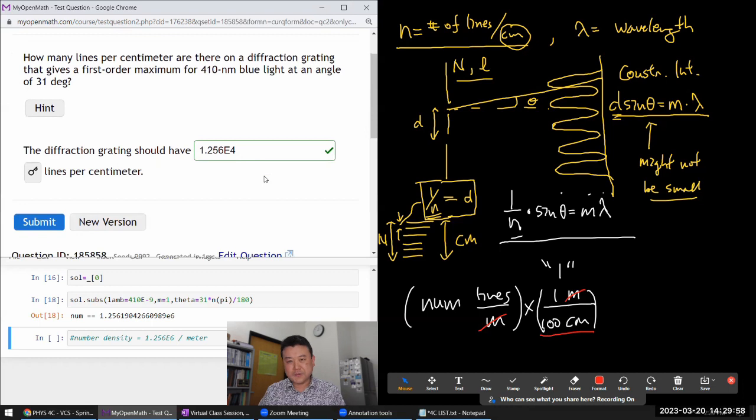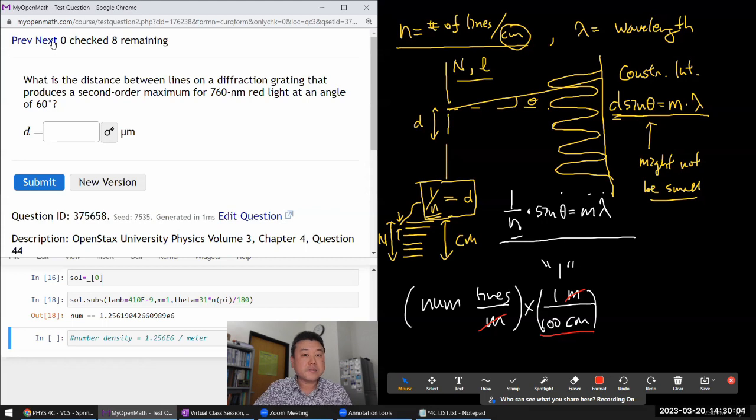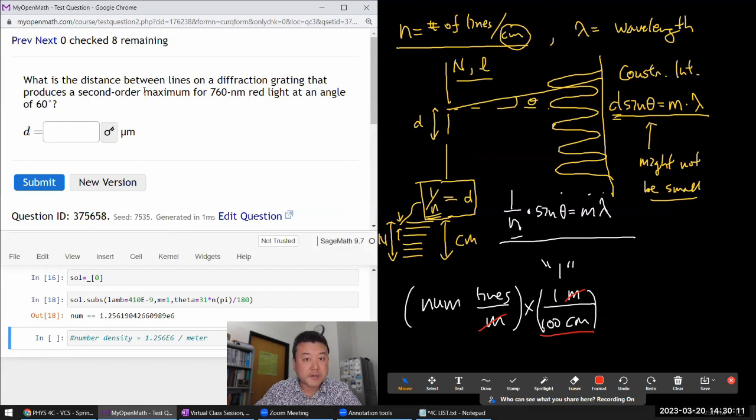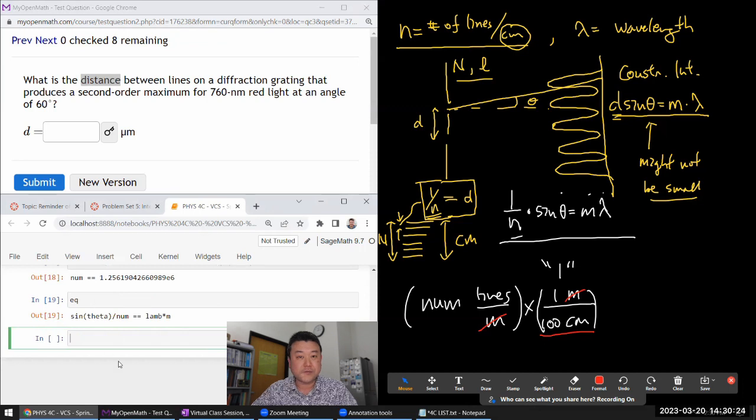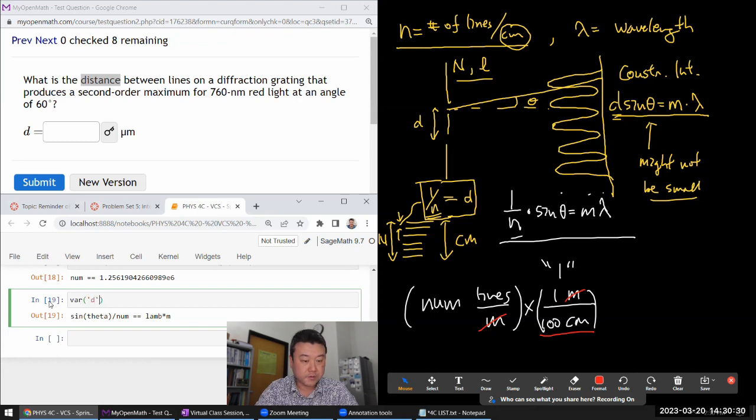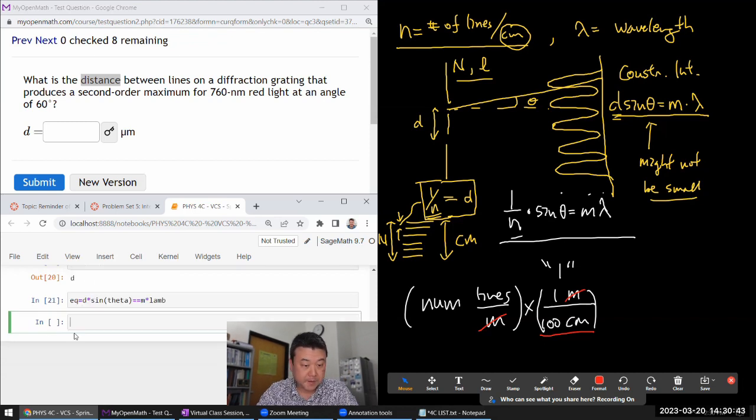One more question along similar lines. It says what is the distance between lines on a diffraction grating that produces a second order maximum for this wavelength at an angle. They're back to referring to distances, so I have to re-enter my equation. The equation is distance times sine theta equals m times lambda.